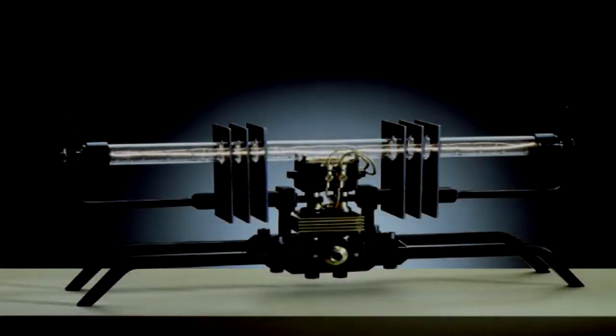Botflies. Item number SCP-658. Object Class: Euclid.